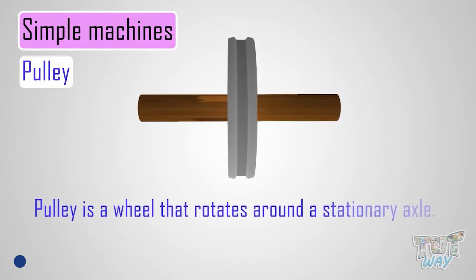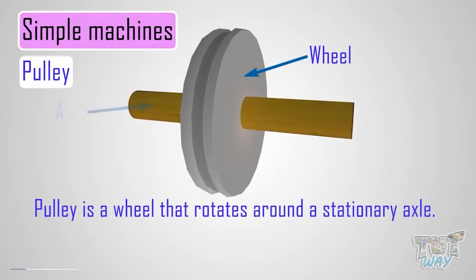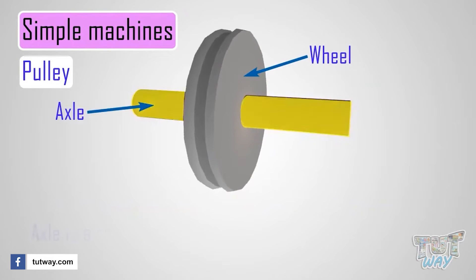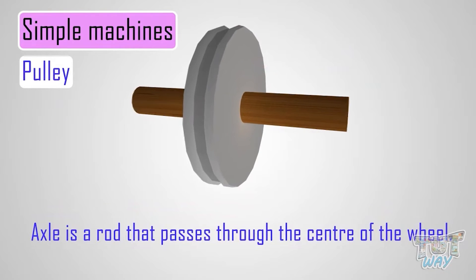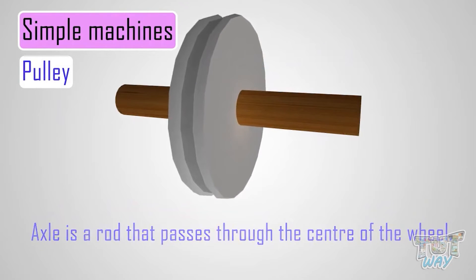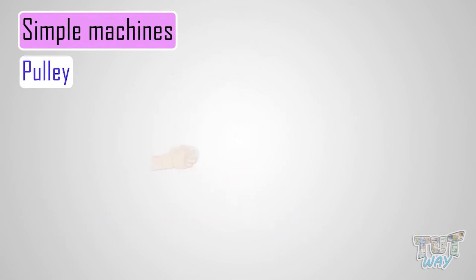A pulley is a wheel that rotates around a stationary axle, where the axle is a rod that passes through the center of the wheel. The outer rim of the pulley is grooved to accommodate a rope or chain.